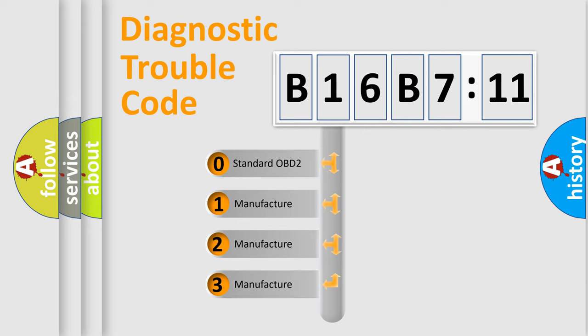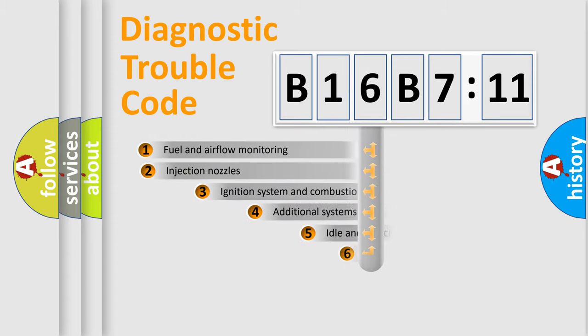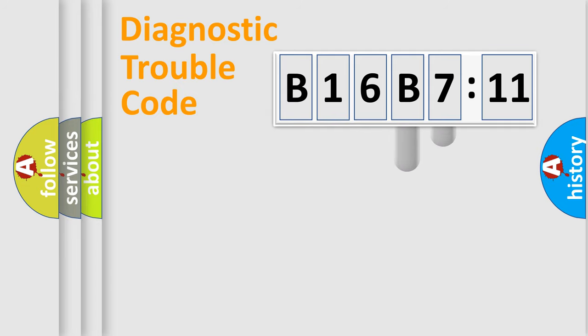If the second character is expressed as zero, it is a standardized error. In the case of numbers 1, 2, or 3, it is a more specific expression of the car-specific error. The third character specifies a subset of errors. The distribution shown is valid only for the standardized DTC code. Only the last two characters define the specific fault of the group.